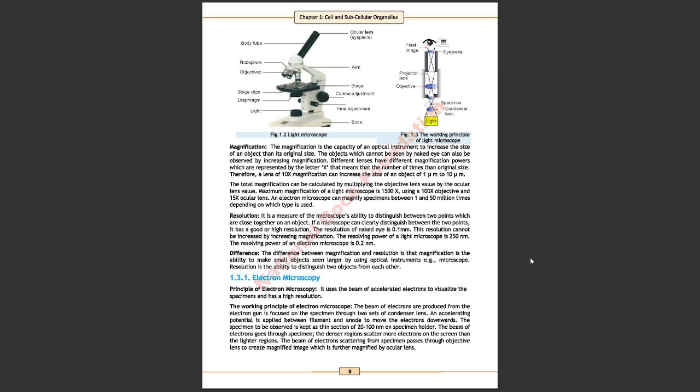It is a measure of microscope's ability to distinguish between 2 points which are close together on an object. If our microscope can clearly distinguish between 2 points, it has a good or high resolution. The resolution of naked eye is 0.1 mm. This resolution cannot be increased by increasing magnification. The resolving power of a light microscope is 250 nanometer. The resolving power of an electron microscope is 0.2 nanometer.